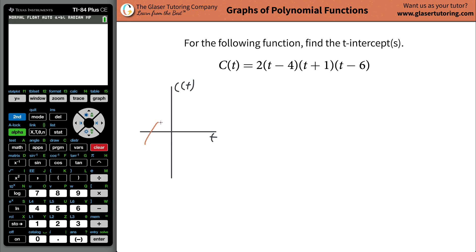Pretend you had a function that looks like this. Now what does it mean to be a t intercept? Well it simply means the function's value at the locations where it crosses that t axis.